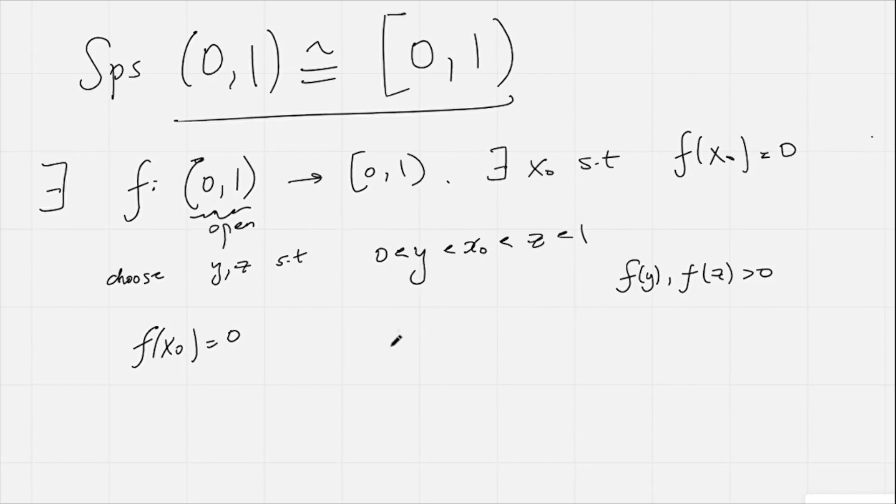So without loss of generality, we're going to say f(y) < f(z). If it's the other way around, you can repeat the argument by swapping the roles of y and z. Okay, so we're assuming f(y) < f(z).